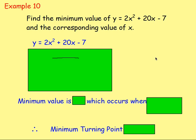Example ten: find the minimum value of y equals 2x squared plus 20x minus 7 and the corresponding value of x. It's difficult to work out the minimum value unless you have something squared. Although we've got an x squared, it makes it harder because we've also got an x term. So what you need to do is complete the square — that way you get something squared plus or minus a number, which makes it really easy to find the minimum.